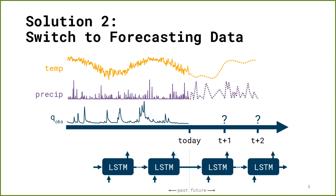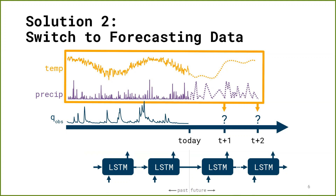This leads us to the second solution, which is to actually make use of forecasting data. For many meteorological variables, we actually have meteorological forecasts, so it seems intuitive that we should make use of this data when we generate runoff forecasts. The idea is: we use historical records, feed them into the LSTM, and then once we reach the point today where our historical records end, we just switch to the forecasting products and keep ingesting the corresponding forecasting product into the LSTM. In this way, we can generate future forecasts of runoff given both historical records of meteorological forcings as well as the corresponding forecasts.